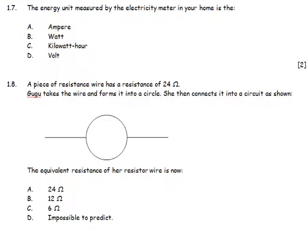The energy unit measured by the electricity meter in your home, this is pure learning again, is in a kilowatt hour. A piece of resistance wire has got a resistance of 24 ohms. Gugu takes the wire and forms a circle. She then connects it into the circle as shown. If she's made a circle with it, this part of the circle over here will have a resistance of 12 ohms, and this part of the circle over here will have a resistance of 12 ohms.